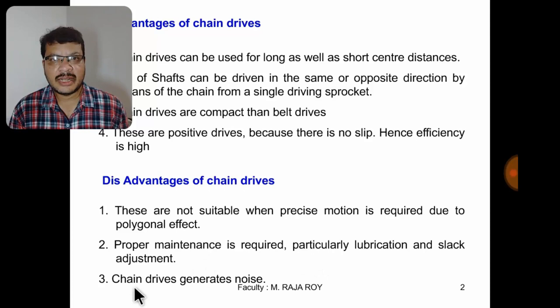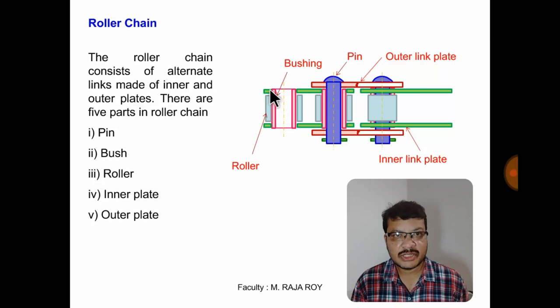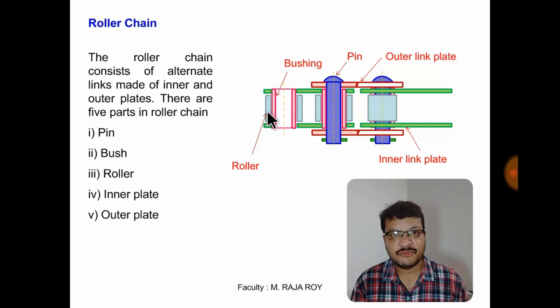Next coming to the construction part. These are the important parts inside the chain. The first one is the pin, which is in press fit with the outer link plate. The next part is the bush, which is in press fit with the inner link plate — the green colored one is the inner link plate. Over the inner link plate there is a roller, which is freely mounted on the bush. The purpose of the roller is to provide rolling friction when the chain is passing over the sprocket.